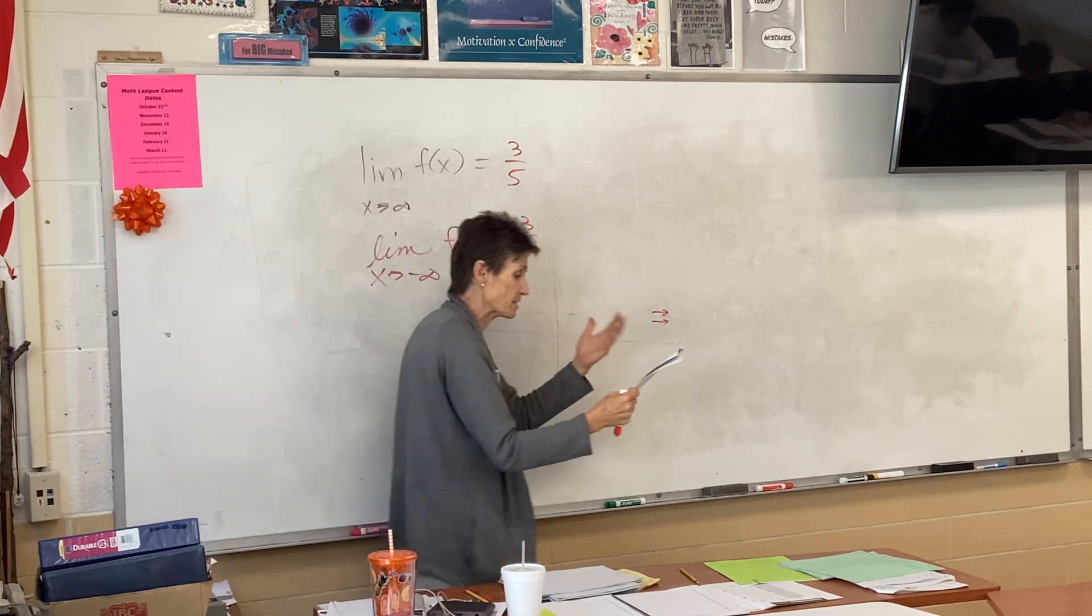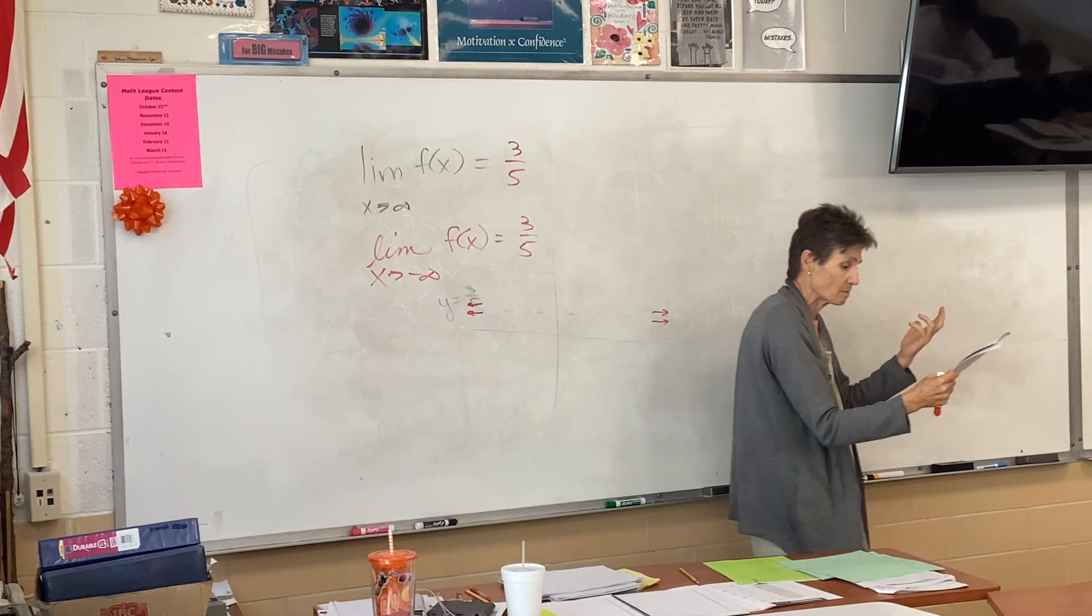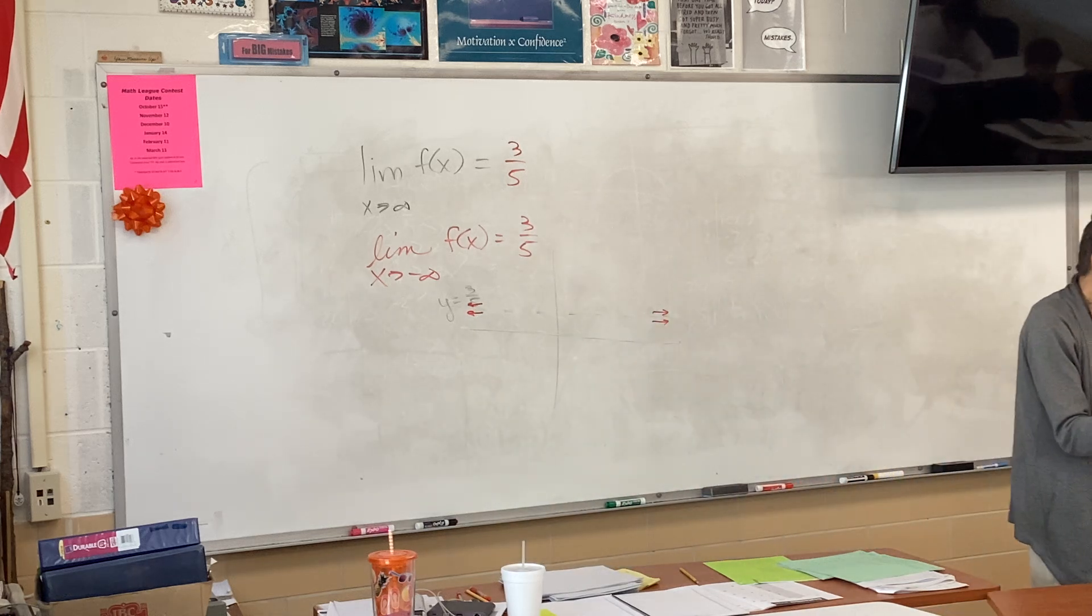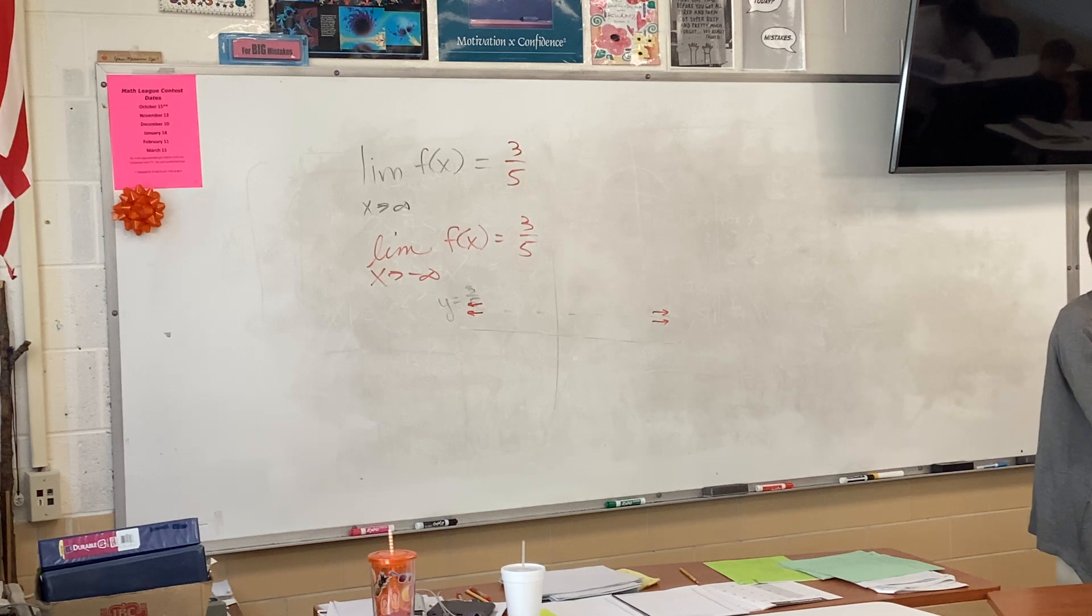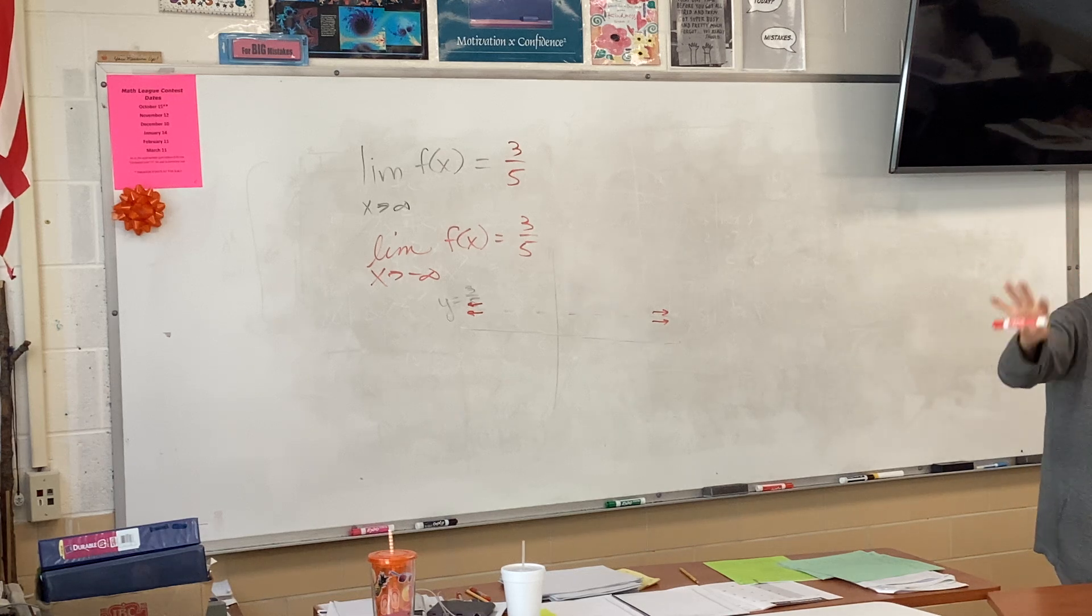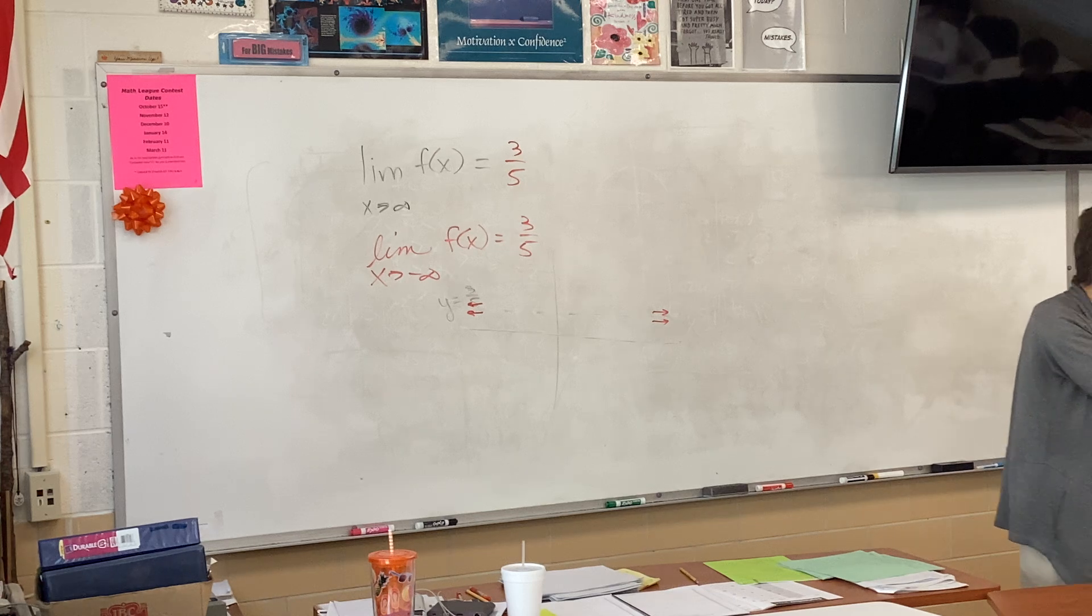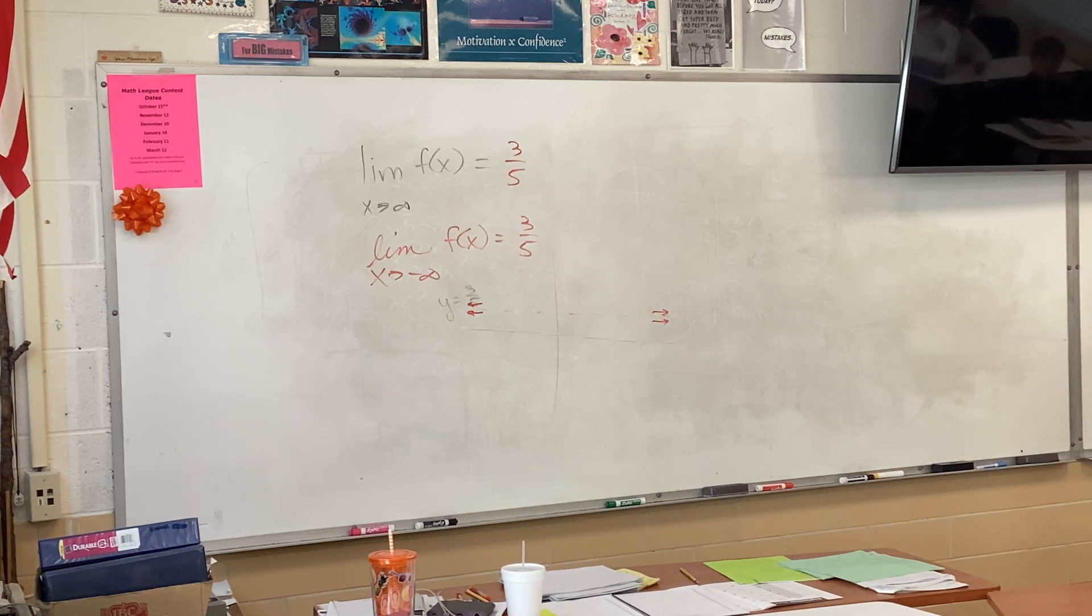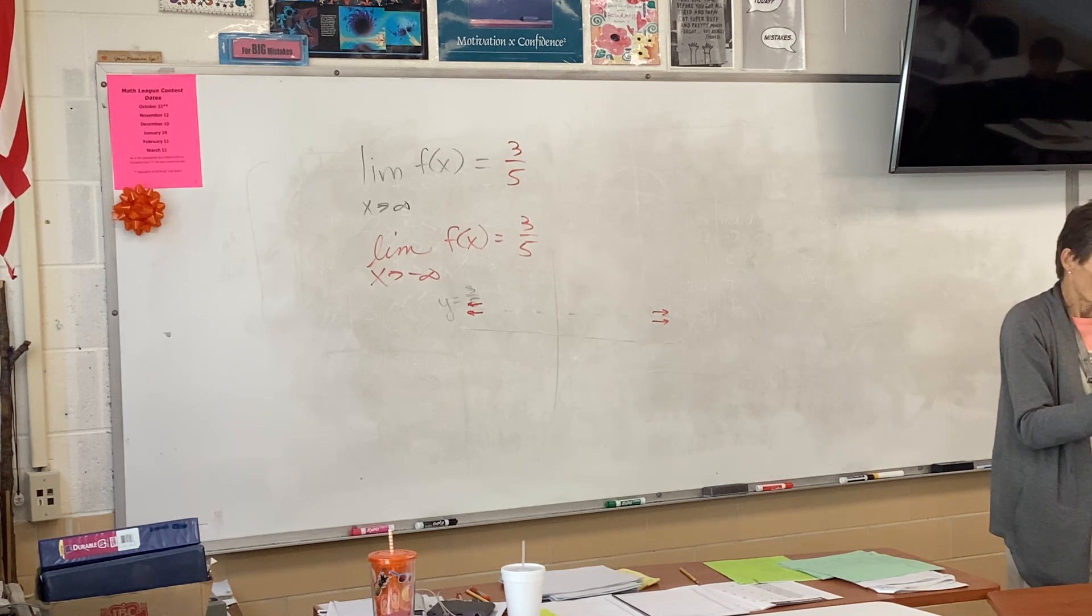So describe the end behavior. It says determine if they have a horizontal asymptote. A has a horizontal asymptote, and where is it? Y equals 3 fifths. And its end behavior is going to approach 3 fifths. That is what a horizontal asymptote is. In fact, they are often called end behavior asymptotes.